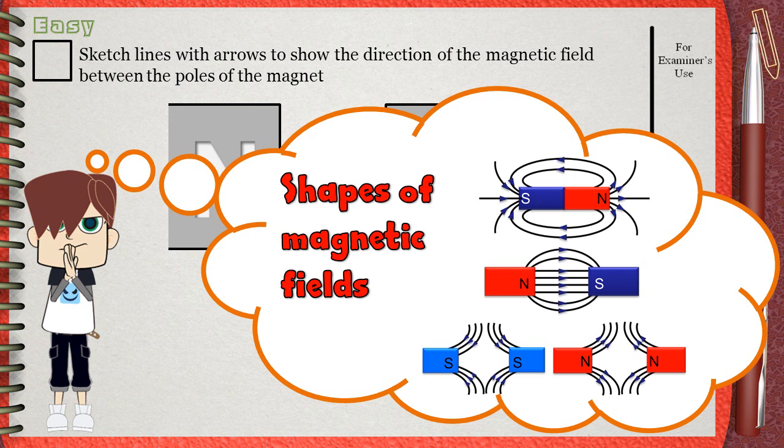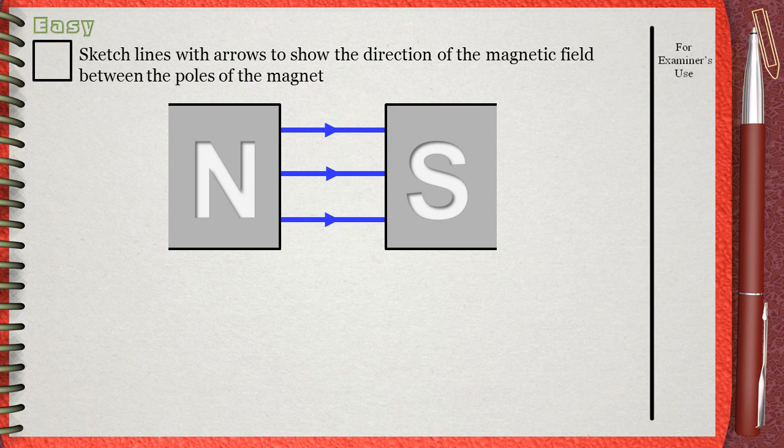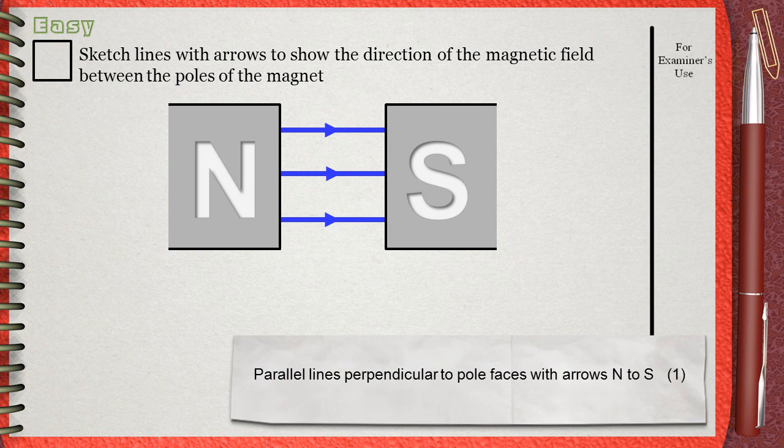It's clear that our case is two opposite poles facing each other. In this case, we will draw parallel lines going out from the north and into the south. This is a single mark question. The mark scheme awards one mark for parallel lines perpendicular to pole faces with arrows from north to south.